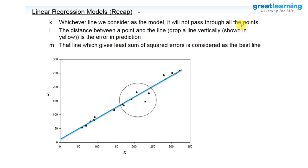If dots are sitting exactly on the line, for those particular records the model is not doing any errors. But for dots sitting away from the line, remember each dot is one record in the data frame — your model is giving incorrect predictions. The difference between prediction and actuals is called error. The best fit line is that line which minimizes the error across all the records in the data frame.